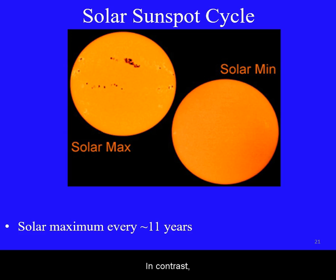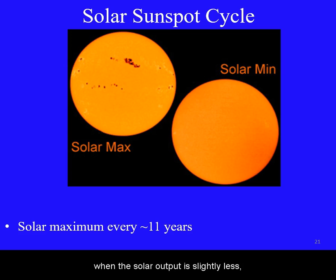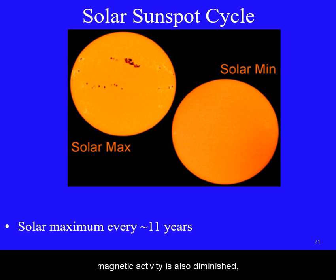In contrast, at solar minimum, when the solar output is slightly less and hence magnetic activity is also diminished, we observe fewer sunspots.